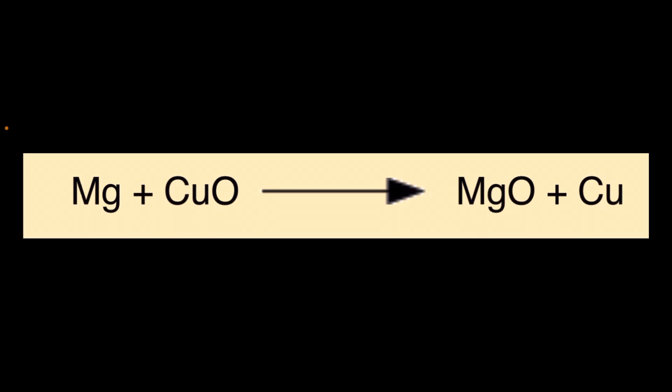Now, magnesium is higher than copper on the reactivity series for metals, and that's why magnesium is able to steal the oxygen from the copper oxide. So in that sense, the magnesium is being oxidized, while the copper is being reduced as it loses that oxygen, and the copper oxide becomes copper.